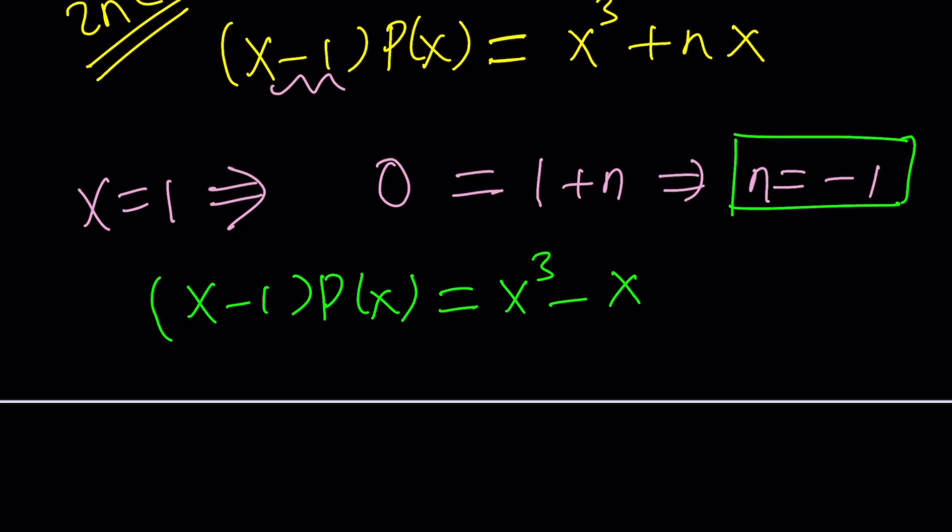And next thing, we're going to divide both sides by x minus 1 because why not, right? Of course, our goal is to find p of x. We found n. x minus 1 cancels out. Of course, you need to assume x does not equal 1, but that doesn't matter because once it cancels out, it can be.